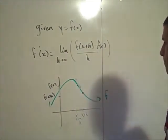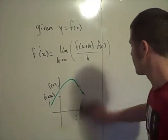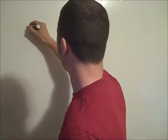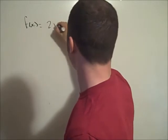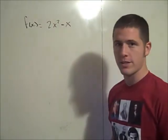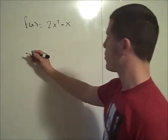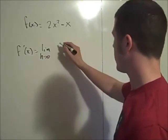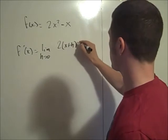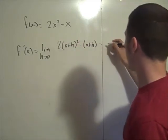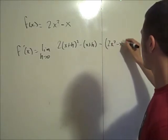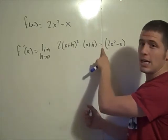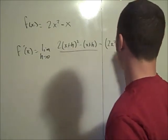We're going to find the slope of the tangent line algebraically using this definition. Let f of x equal 2x squared minus x. We want to find the derivative of this quadratic function. So f prime of x is the limit as h goes to 0 of f of x plus h, which is 2 times x plus h squared minus x plus h, minus f of x, which is 2x squared minus x — in parentheses because we need to distribute the minus sign. A common mistake here is losing a minus sign in the algebra. This is all divided by h.